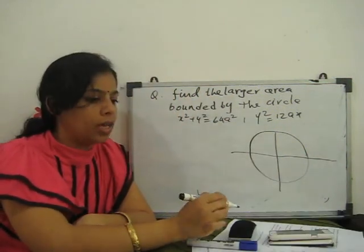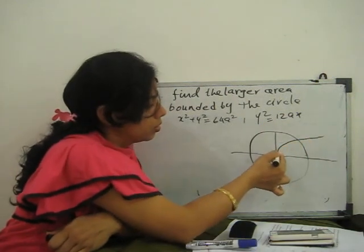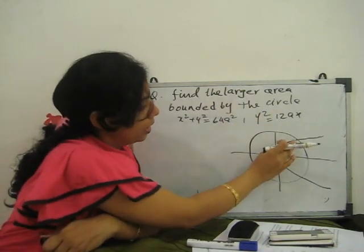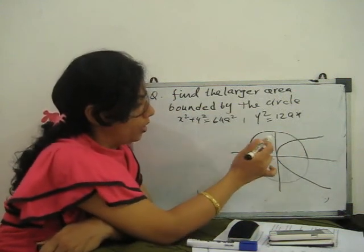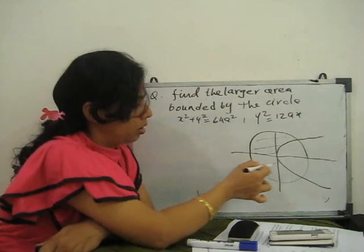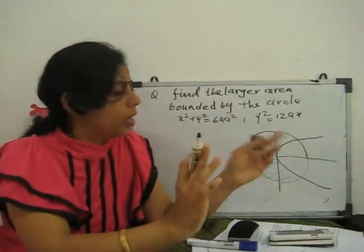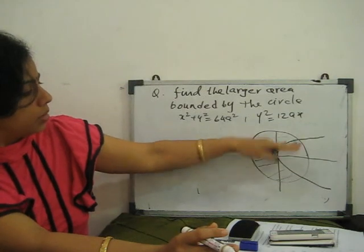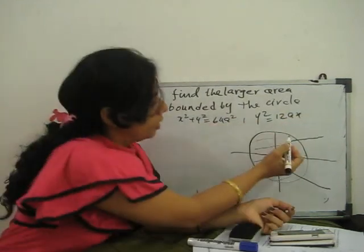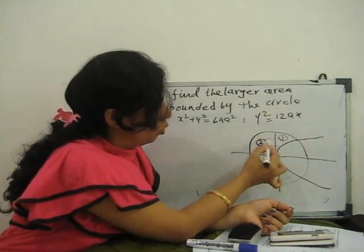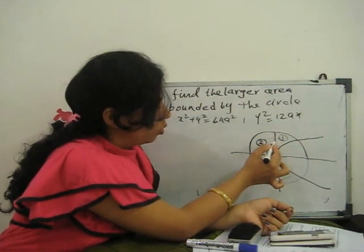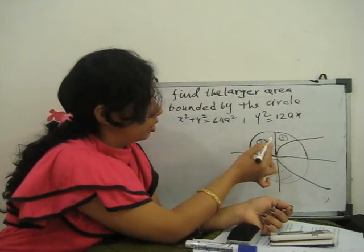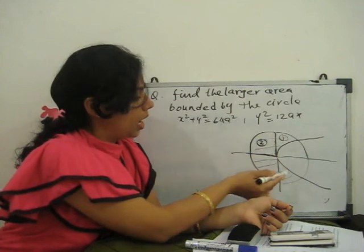Next is y² = 12ax, which is a parabola like this. Now, larger area means this whole area — this area is the smaller one and this whole area is the larger one. This curve is symmetric about the x-axis. So we divide into area 1 and area 2. We find the area above the x-axis and then take twice of it because it's symmetric.